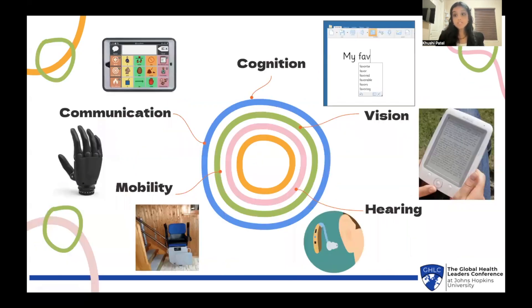Let's dive a little deeper into these, starting with cognition. An example of assistive technology in this field is word predictor software. Whether it be communicating with friends via text or typing up an essay, you may notice that your device offers a suggestion for the next few words you are about to type. This is helpful for people with cognitive impairments like dyslexia because it helps them in the tasks of spelling and forming written sentences.